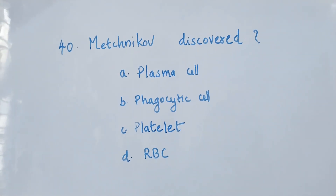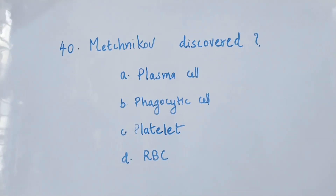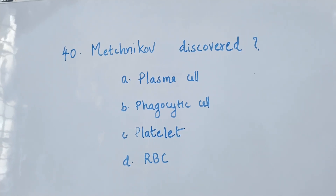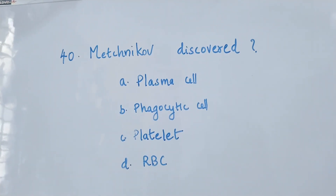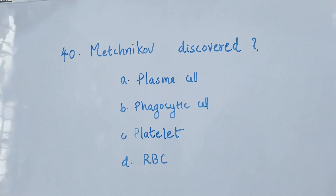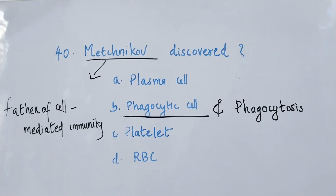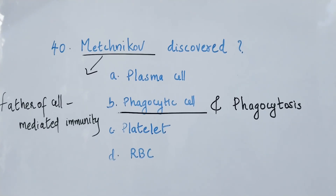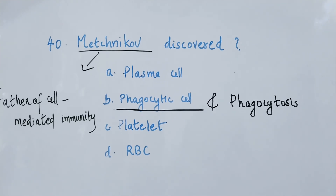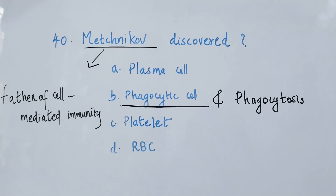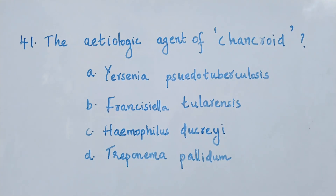Question number 40. Which of the following is discovered by Metchnikoff? Option A: plasma cell. Option B: phagocytic cell. Option C: platelet. Option D: RBC. The right answer is option B, phagocytic cell. Metchnikoff discovered phagocytic cells and phagocytosis, and he is also known as father of cell mediated immunity.